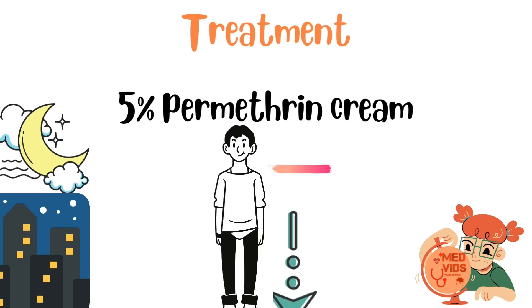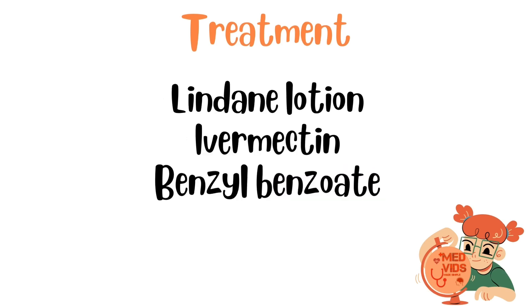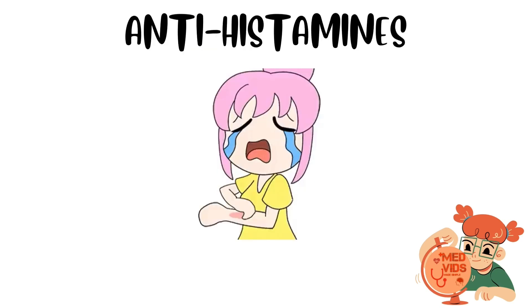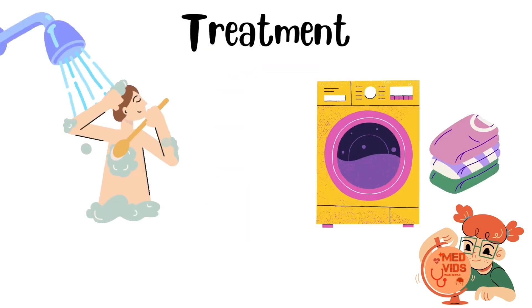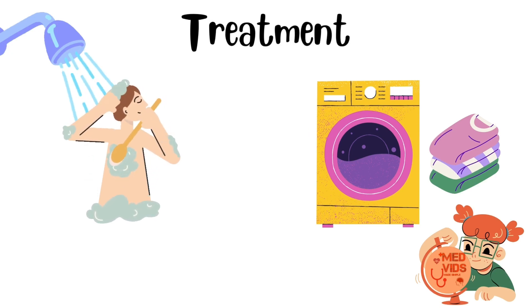Treatment is usually with 5% permethrin cream, applied below the neck of the patient, advised to be applied at night, once a week. It is important to treat all family members living with the patient to prevent recurrence. Other treatment options are lindane lotion, ivermectin, and benzyl benzoate. To overcome severe itching and allergic symptoms, antihistamines are usually prescribed.